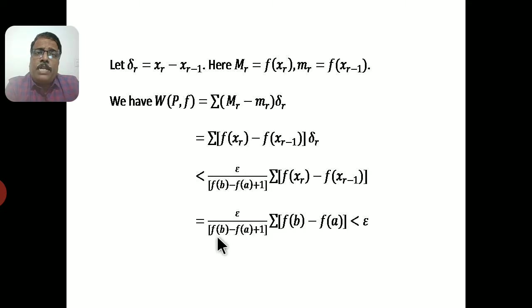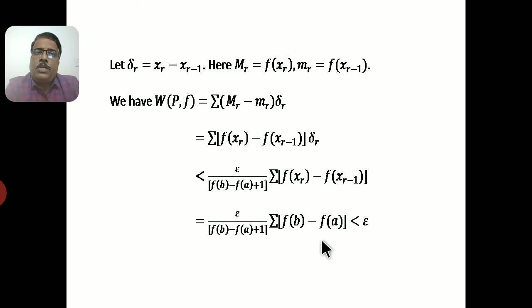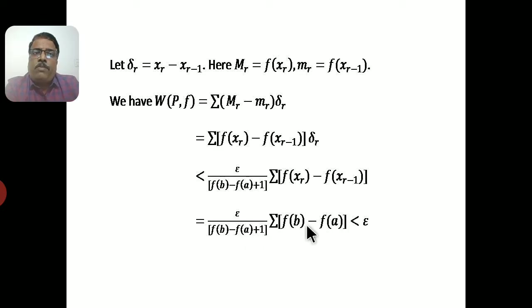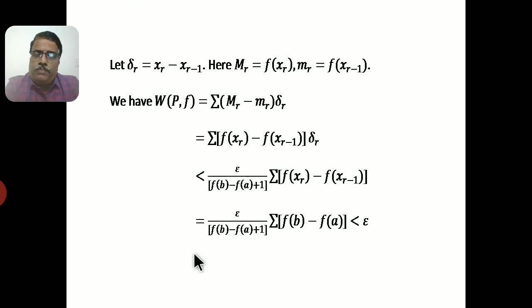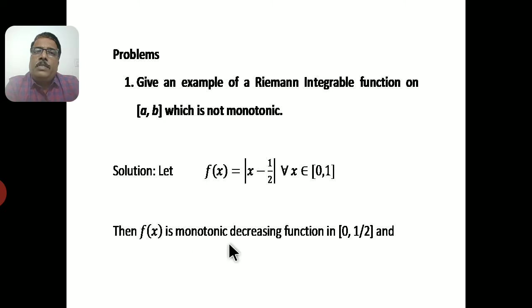Replacing δᵣ by epsilon / [f(b) − f(a) + 1], we get W(P, f) ≤ epsilon / [f(b) − f(a) + 1] · summation of [f(xᵣ) − f(xᵣ₋₁)], which telescopes to f(b) − f(a). This is always less than epsilon, since f(b) − f(a) cancels with the denominator's leading term. Therefore, the oscillatory sum W(P, f) < epsilon, so f is integrable.